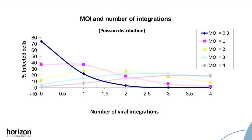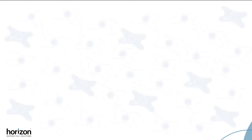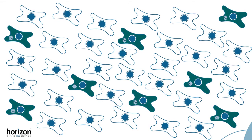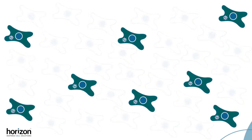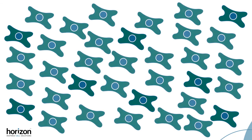Most of the cells get no viral particles when transducing cells with an MOI of 0.3, and will be removed during selection. The majority of the remaining cells will have received a single viral particle, and can then be grown, expanded, and used as desired.